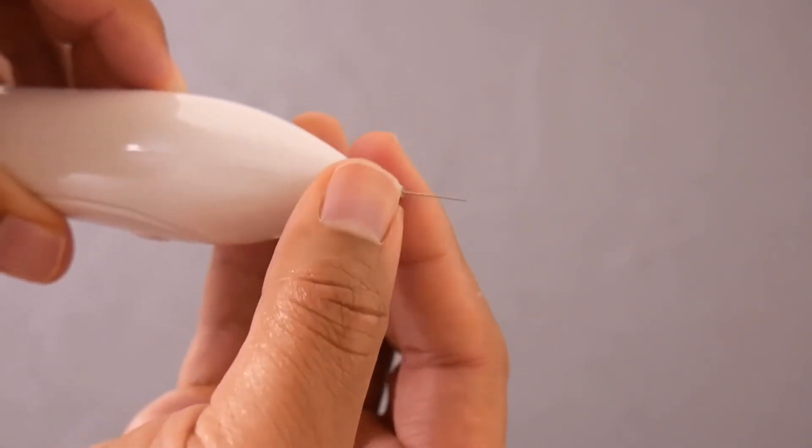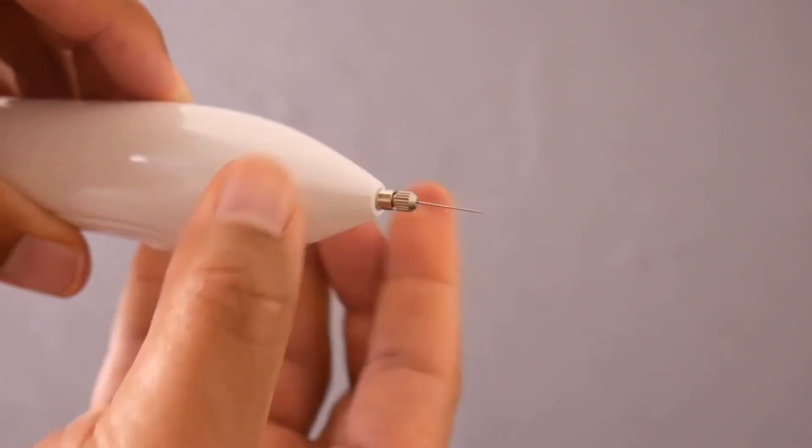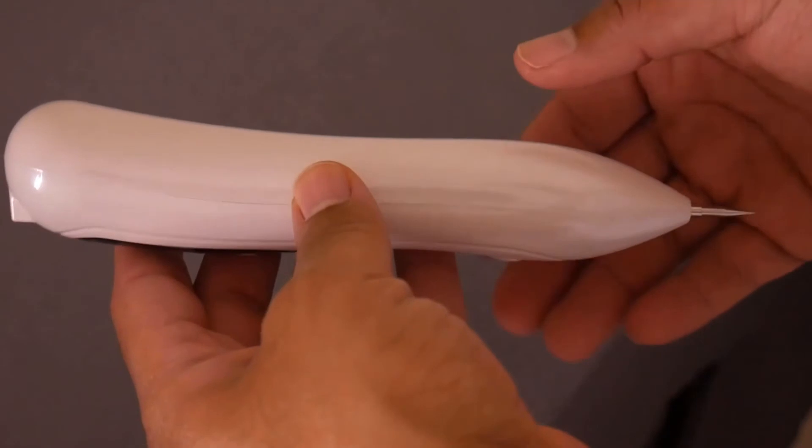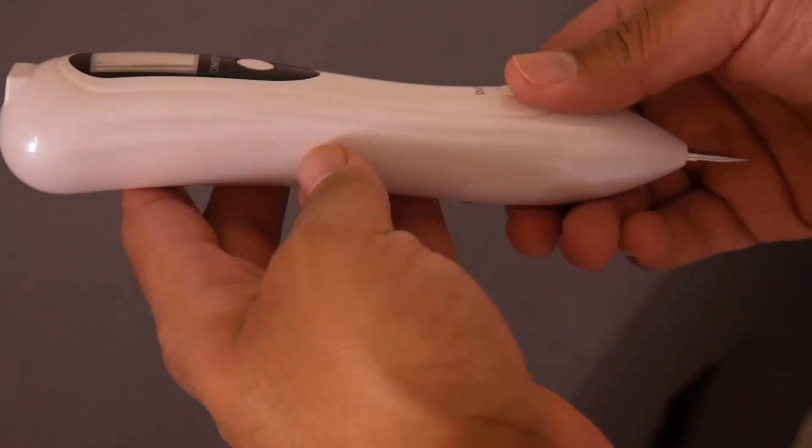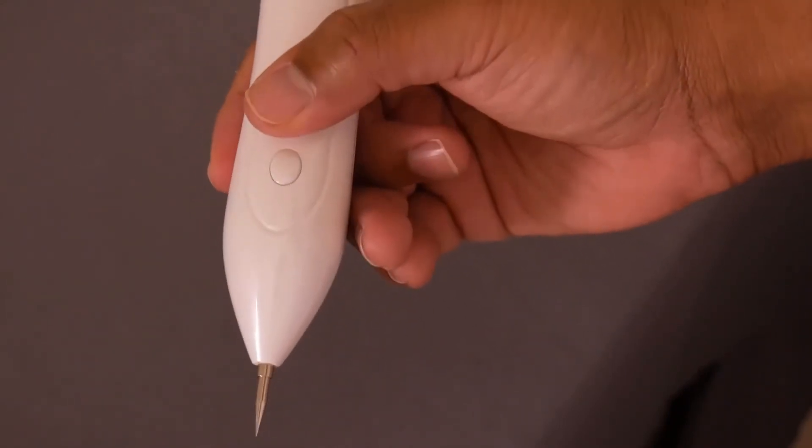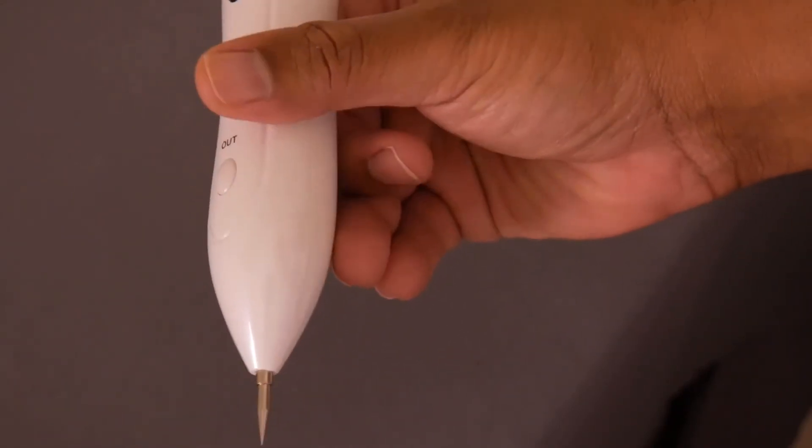Once you do that and it's secure, you're ready to use your spot remover with a larger needle. As you can see, the overall design of your spot remover is ergonomic. It is very simple to hold in your hands, and the operation button is in the perfect spot for accuracy and control.